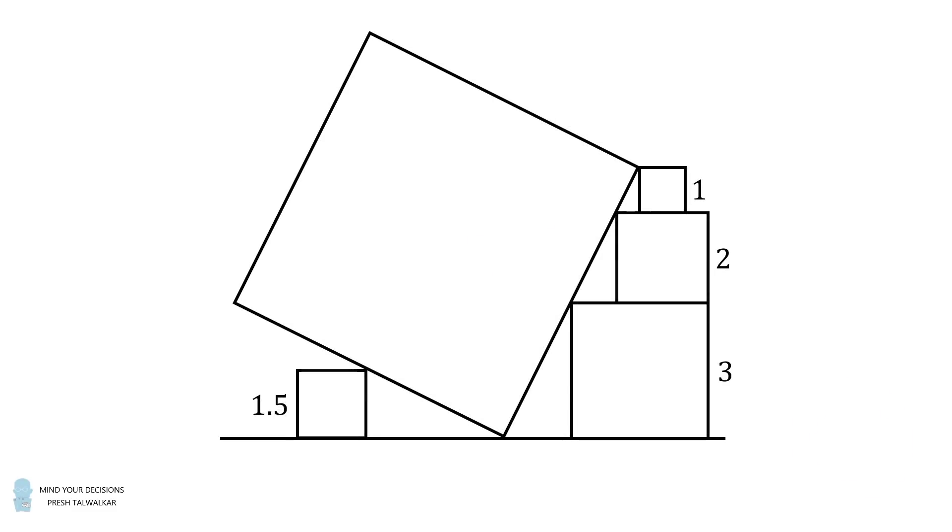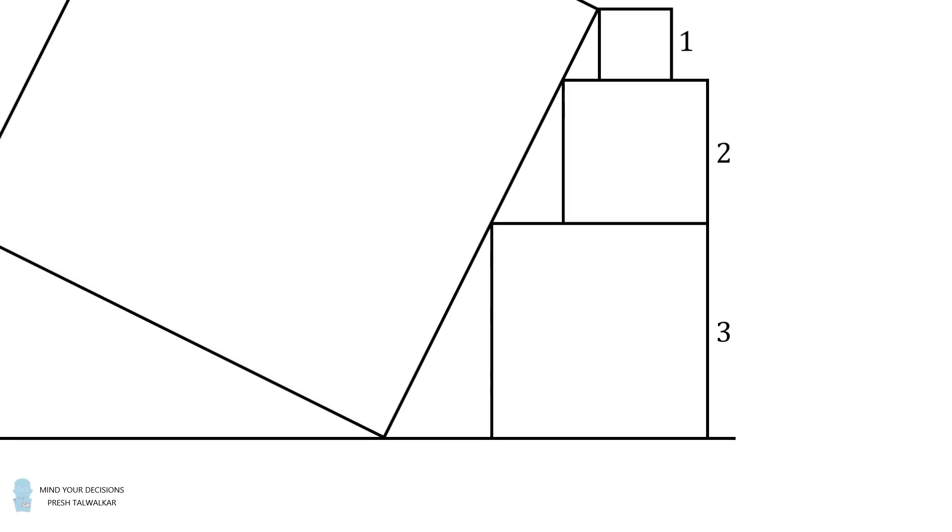A tricky part of this puzzle is there's too much information. You don't need the square whose side length is 1.5 at all. Instead, let's zoom in on the squares whose side lengths are 1, 2, and 3.